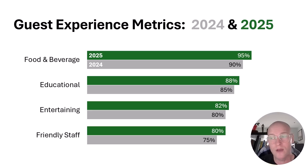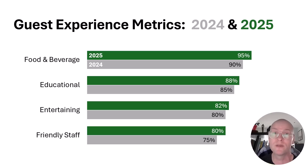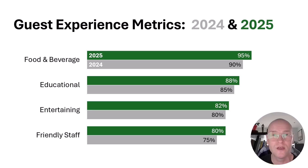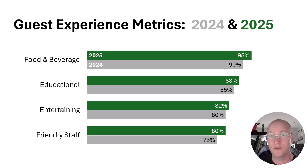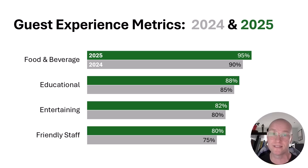Pretty cool — a little tiny workaround. Again, a text box right on top of the chart is probably going to do just as good for you 90% of the time. But if you want that workaround solution to make the chart a little bit more dynamic, that's the way to do it — add those two extra columns and put your legend in the chart just like this.